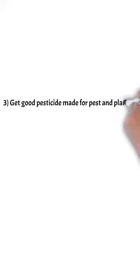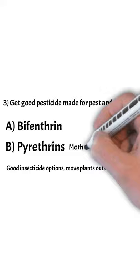So you want a good pesticide. Bifenthrin is a really good one — it can treat over 70 pests. And pyrethrins is good for moths, gnats, and flies. So choose one of those.